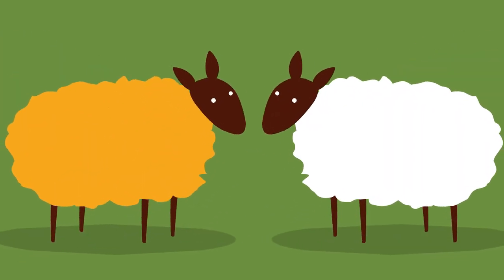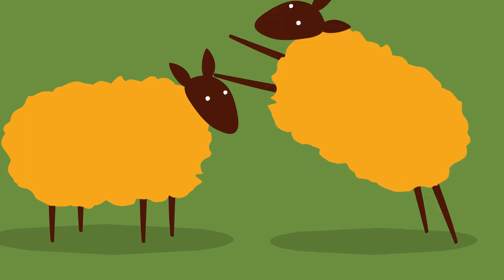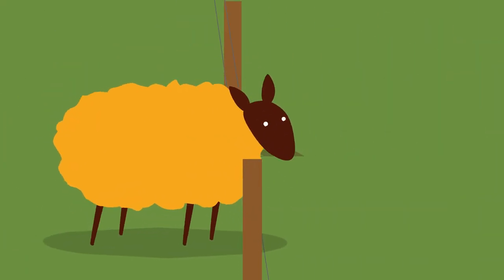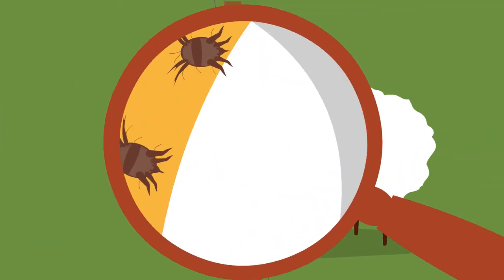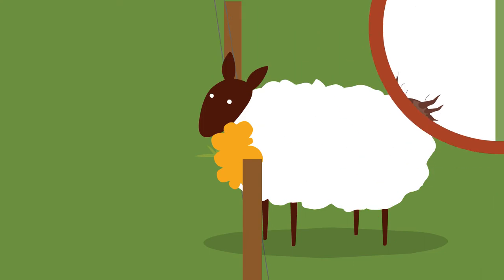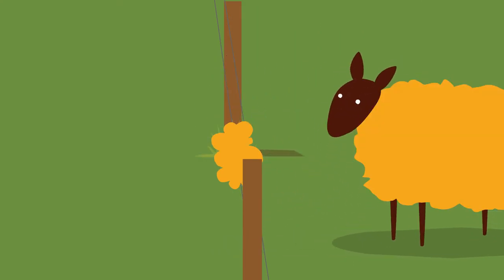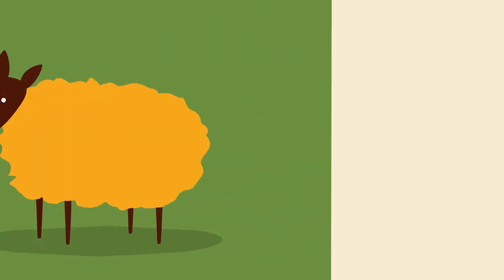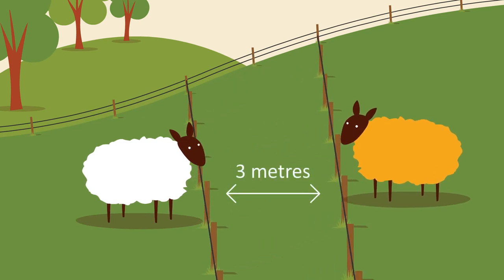It's worth remembering that as well as transferring directly from sheep to sheep, sheep scab mites can live off-host for 16 to 19 days, meaning that fences, loose wool, sheds, transport, etc. can all be sources of infection. Double fencing, with a gap of at least three metres, is recommended.